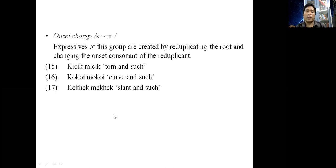In partial reduplication, we have onset change, that is k to m. Expressives of this group are created by reduplicating the root and changing the onset consonant of the reduplicant. For example, 15 to 17: kichik michik 'torn and such', kokoi mokoi 'curve and such', and kekhek mekhek 'slant and such'.